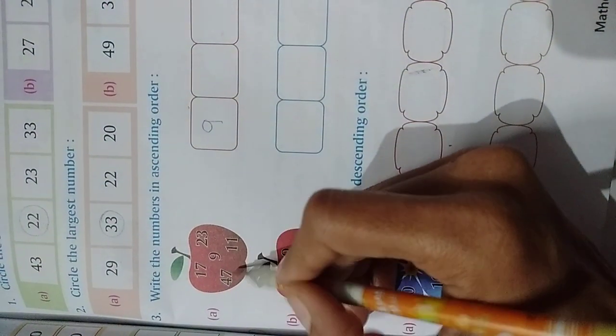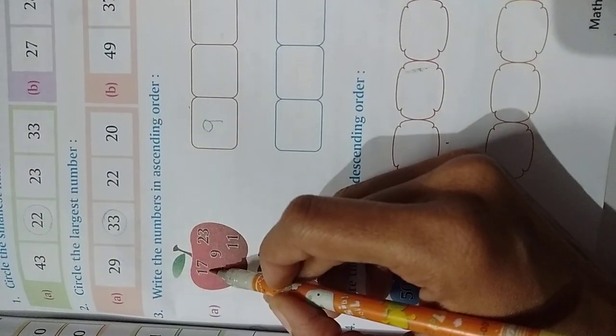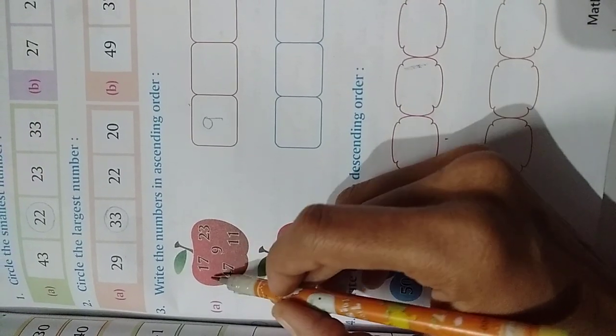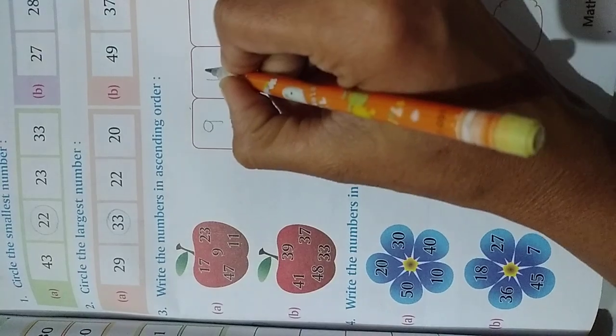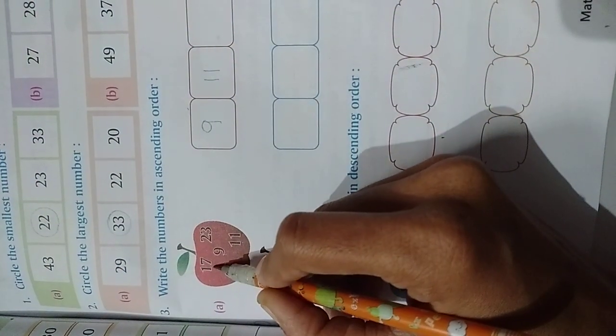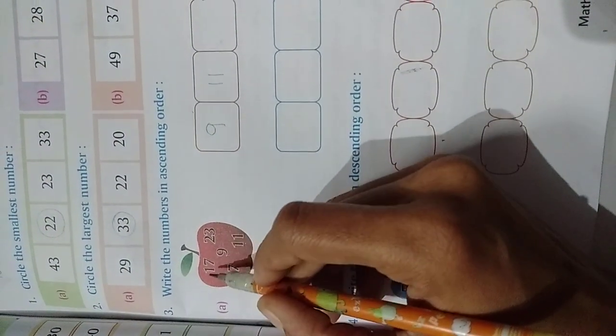Now after that which number is smaller? 23, 17, 11. Which one is smaller here? 11. So right here 11. After that 17 or 23? Right. 17.